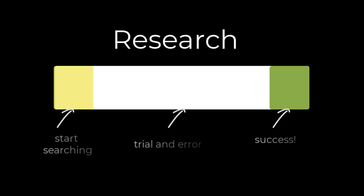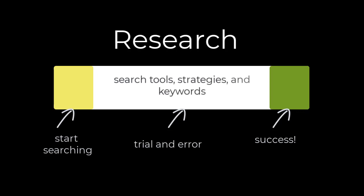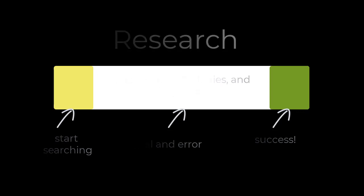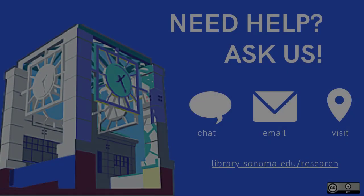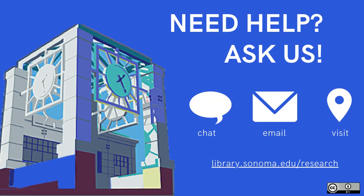Research is a process of trial and error. Experiment with different search tools, strategies, and keywords to see what works best for your topic. If you're not sure what to try next, ask a librarian.